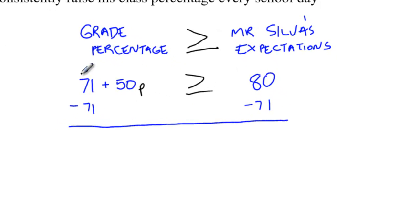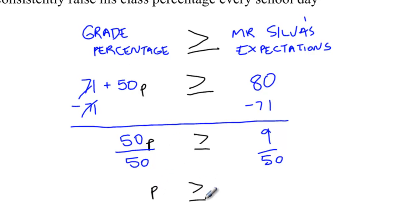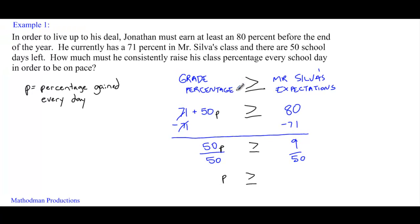From here, all you have to do is solve for P. Subtract 71 from both sides — the 71s cancel out. You're left with 50P is greater than or equal to 80 minus 71, which is 9. The last step is to divide both sides by 50, and you're left with P. His percentage that he needs to gain every day has to be greater than or equal to 0.18%.